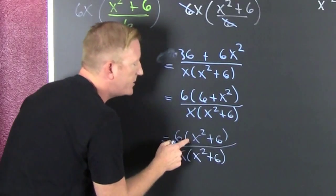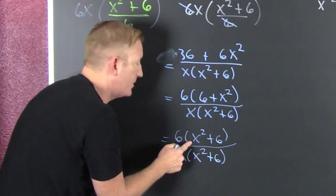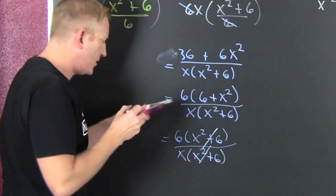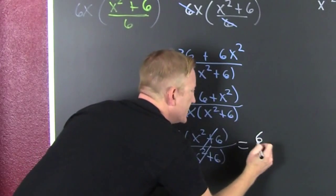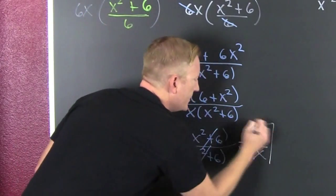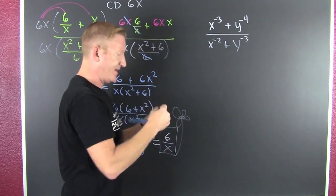x times x squared plus 6. Now look at that. I use my commutative property to rewrite that in that order to see to be clear that... And then when the dust settles, you're left with a 6 over x. Boxing flower.